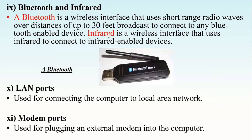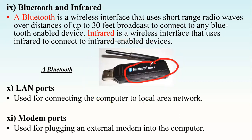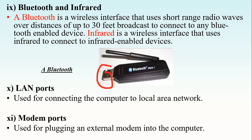Bluetooth is a wireless interface that uses short-range radio waves over distances of about 30 feet to connect to any Bluetooth-enabled device. Infrared is a wireless interface that uses infrared light to connect to infrared-enabled devices. An example Bluetooth device labeled 'Bluetooth' has a USB-type connector on its edge. This means the computer or device you use it with must have a USB port, since the Bluetooth device's connector is of USB type.